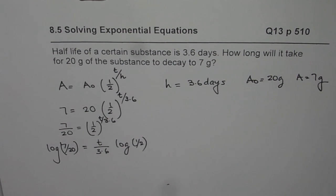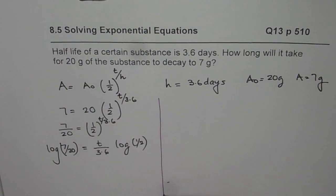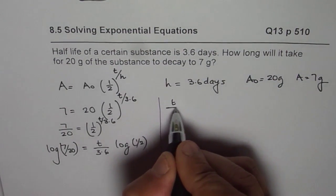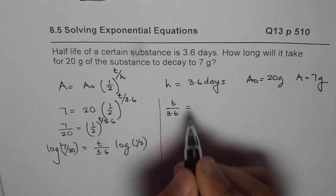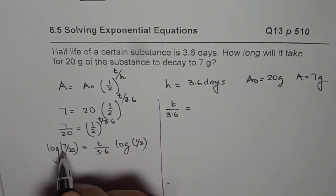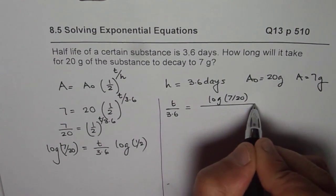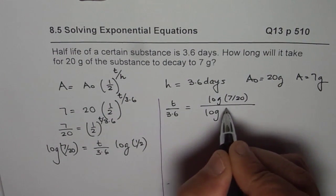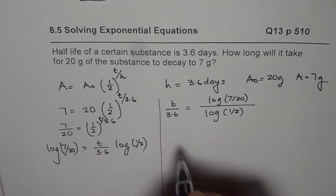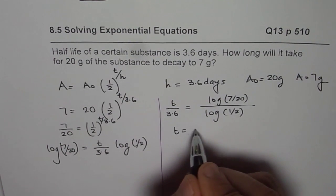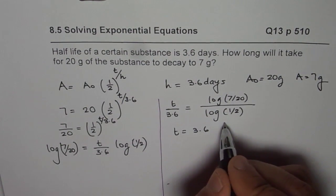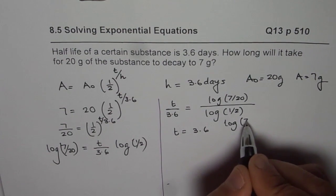And now we can write, let me take it to the right side and simplify it further. So we can write t over 3.6 equals log of 7 over 20 divided by log of half, or t equals 3.6 times log of 7 over 20 divided by log of half.